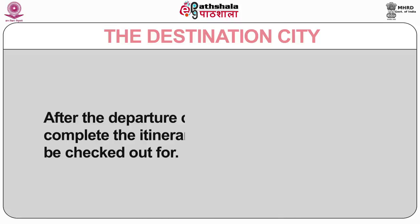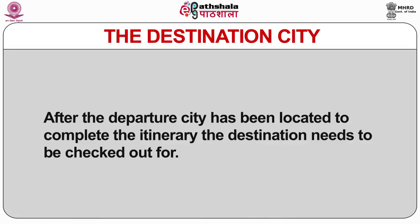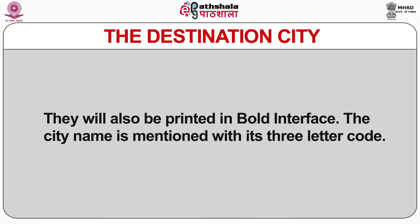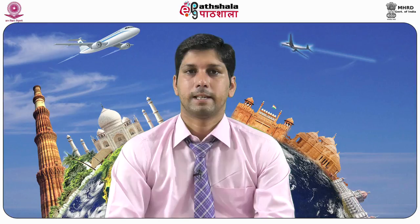After locating the departure city, the Destination City needs to be checked — listed in alphabetical order under the departure city and printed in bold. The city name is mentioned with its three-letter code, and if several airports exist, the code and name of each arrival airport is mentioned. The Official Airline Guide contains all flights — direct and with stop-overs — listing direct flights first, followed by transfer connections involving one or more changes of flight.